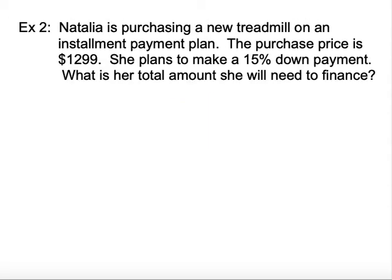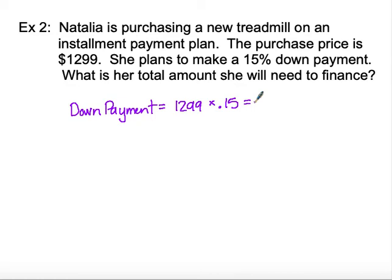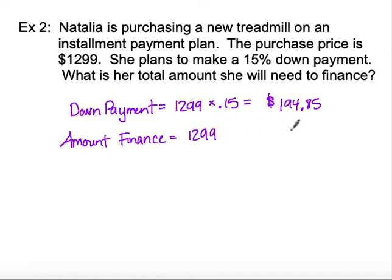Moving on to example two: Natalia is purchasing a new treadmill on an installment payment plan. The purchase price is $1,299 and she plans to make a 15% down payment. What is the total amount she will need to finance? In this one we're not given the straight down payment, so we calculate it using the percentage. The cost of the treadmill is $1,299 and she's putting 15% down, making her down payment $194.85. To calculate the amount she has to finance, we start with $1,299 and deduct her down payment of $194.85, giving an amount financed of $1,104.15.